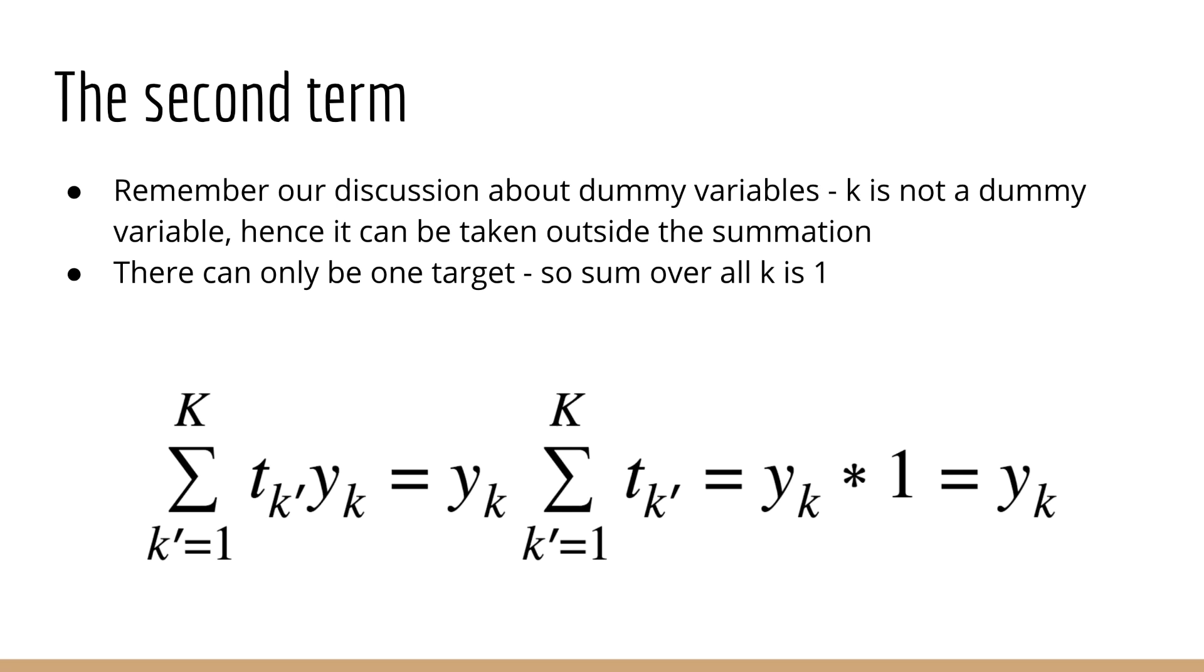Next, let's look at the second term. Remember what I said earlier about dummy variables. Only dummy variables must exist inside the summation. Luckily, k' is the dummy variable, and k is not. So in fact, y of k can be brought outside the summation.